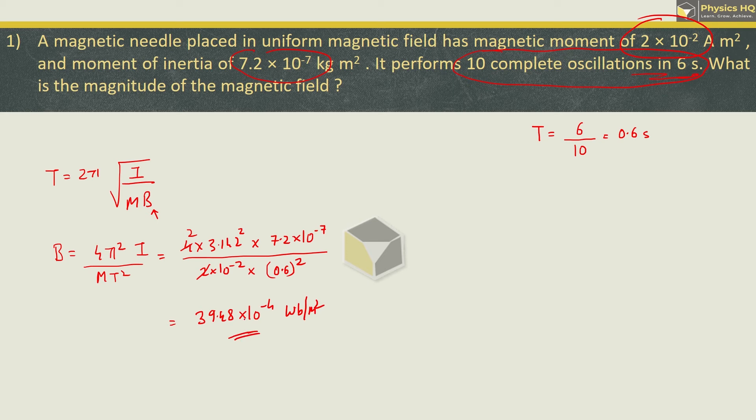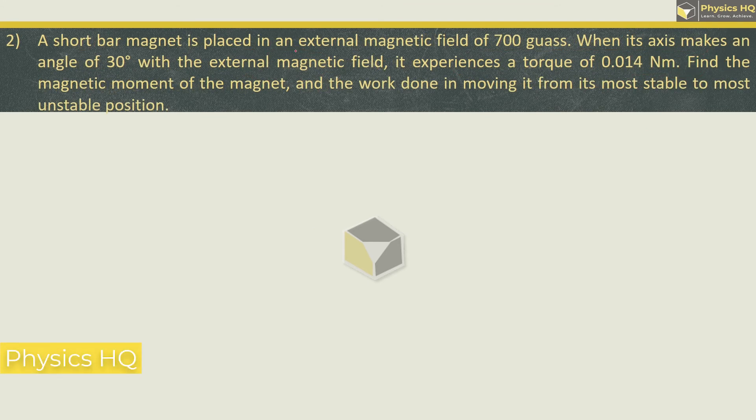If you have any issues with how to use logbook for solving sums, please click on the top right i icon and check the video. Let us go ahead with the next sum. A short bar magnet is placed in an external magnetic field of 700 Gauss when its axis makes an angle of 30 degree with the external magnetic field. It experiences a torque of 0.014 Nm.